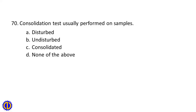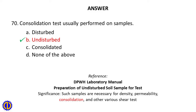Question 70. Consolidation test is usually performed on which samples? A. Disturbed, B. Undisturbed, C. Consolidated, D. None of the above. Answer: B. Undisturbed. Reference: DPWH Laboratory Manual, preparation of undisturbed soil sample for test. Such samples are necessary for density, permeability, consolidation, and other various shear tests.